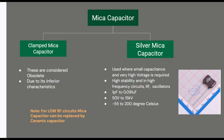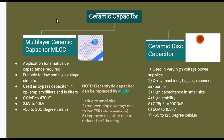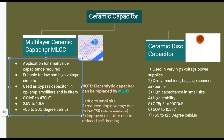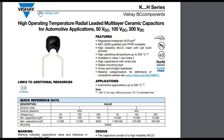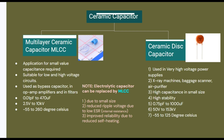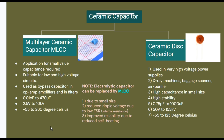Next is the ceramic capacitor. Its first type is the multilayer ceramic capacitor, which uses ceramic as dielectric. It is used in applications where a small value of capacitance is required, as a bypass capacitor in op-amp amplifiers and in filters. They are available in a very wide capacitance range from 0.01 picofarad to 470 microfarad, voltage range from 2.5 volts to 10 kilovolts, and can withstand temperatures from minus 55 to plus 260 degrees Celsius, making them highly suitable for both low and high voltage circuits.